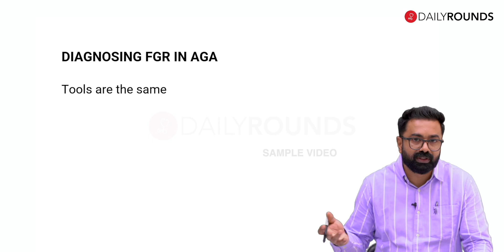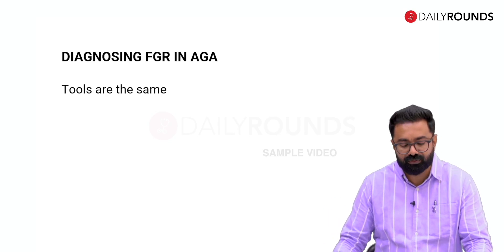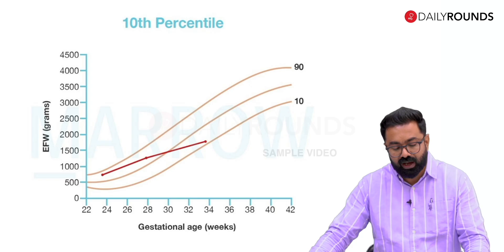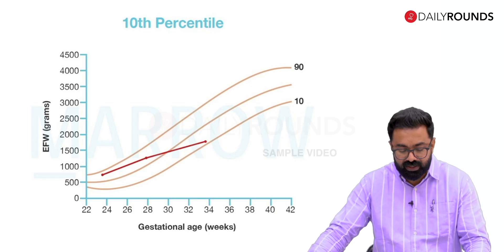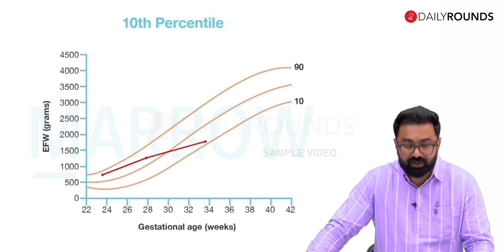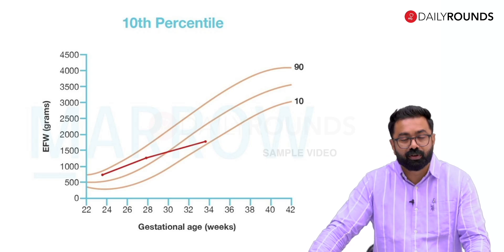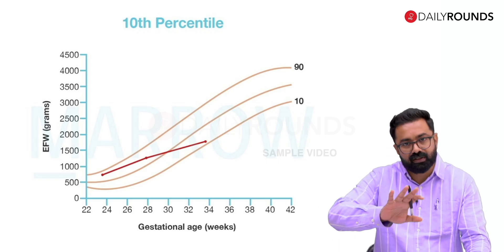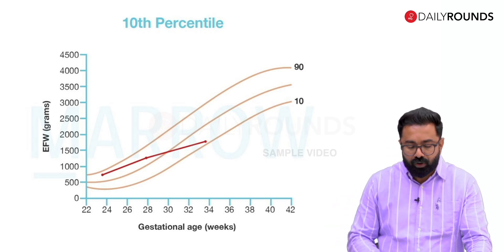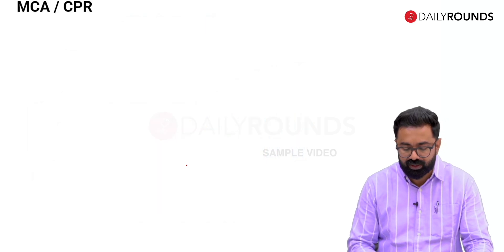How do you diagnose FGR in AGA? The tools are the same as with early onset FGR in SGA babies. The growth charts become much more relevant here because the criteria of falling centiles is very well demonstrated in the growth chart.